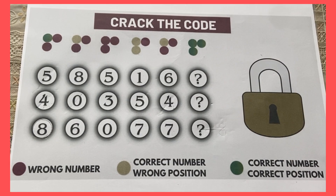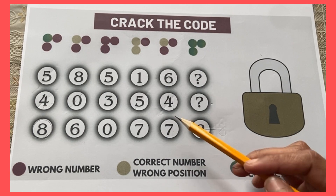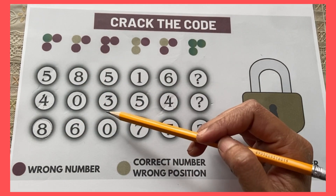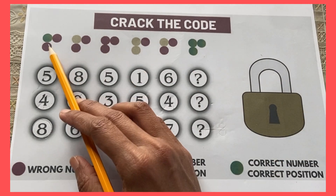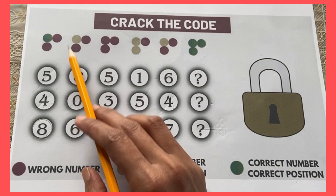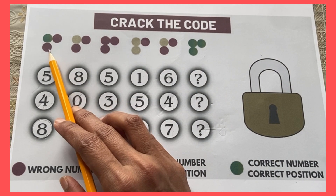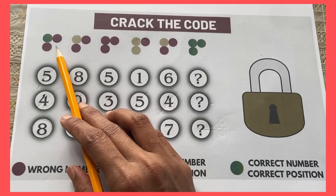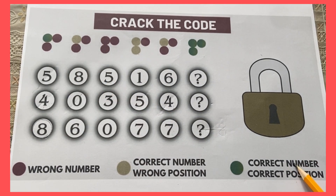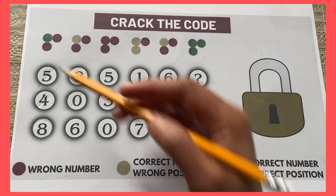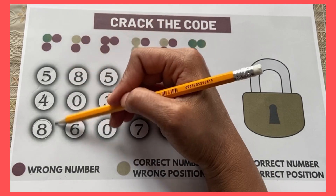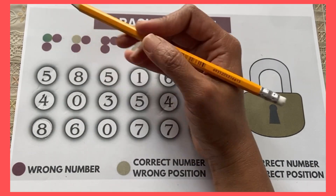Hi, crack the code! We have some rules and we have to find out which is the correct number. The clues are given in the form of green, red, and yellow. Green means the number is correct and in the correct position. Red means the wrong number. Yellow means the correct number but in the wrong position.